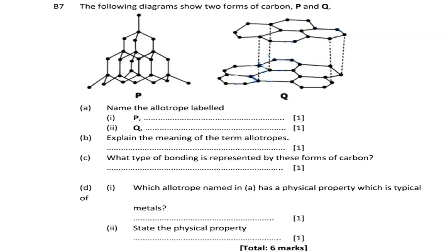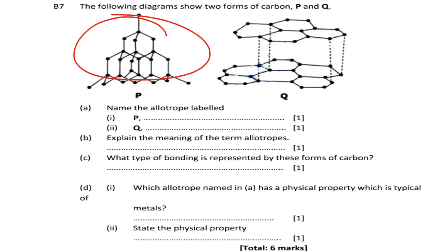In looking at this third part on carbon, we are going to answer the question. The diagram below shows two forms of carbon, labeled P and Q. Carbon can exist in two forms, as we are going to discuss. The question is: name the allotrope labeled P and Q — name the two forms of carbon. When you see such a structure, one form of carbon is called the diamond, and of course the other one is graphite.